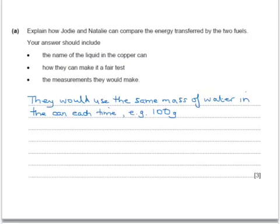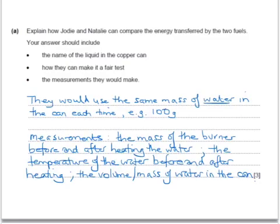In your answer you would want to say that they would use water in the copper can, and in order to make it a fair test they'd use the same mass of that water in the can each time, for example 100 grams. In terms of the measurements they'd make, you might say the mass of the spirit burner before and after heating the water, or the temperature of the water before and after heating. You might also mention the volume or the mass of the water in the can. Either could be used because 100 cubic centimetres of water weighs 100 grams anyway.